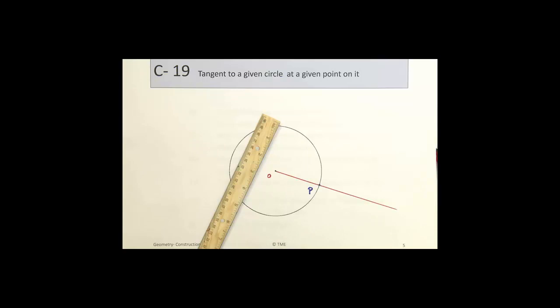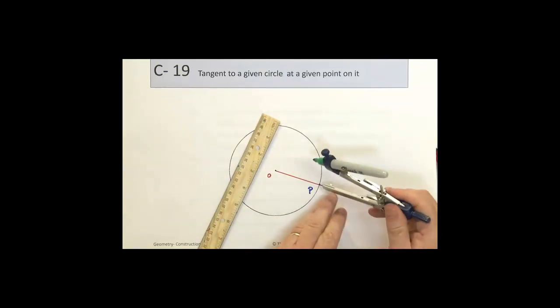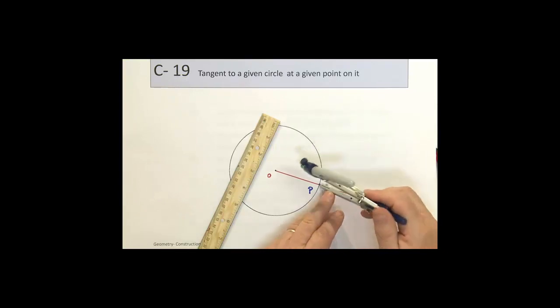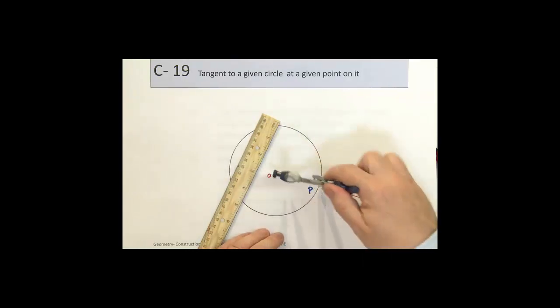So what we do is we take the point P, and we notch the line OP with two points that are equidistant from each other. There's one, and there's another.